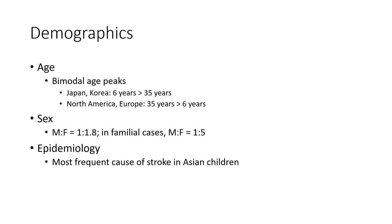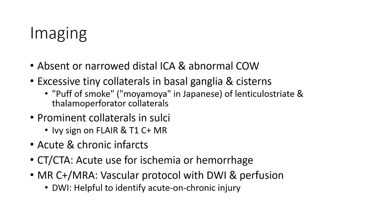The male to female ratio is 1 to 1.8 overall, and in familial cases the male to female ratio is 1 to 5. Epidemiologically, Moyamoya is the most frequent cause of stroke in Asian children.